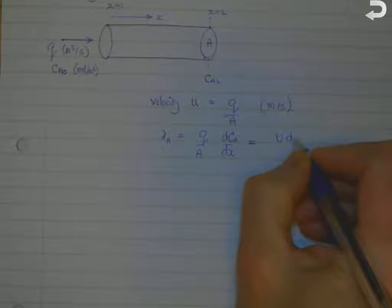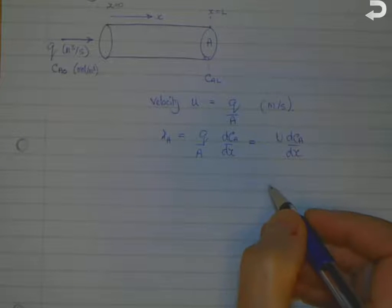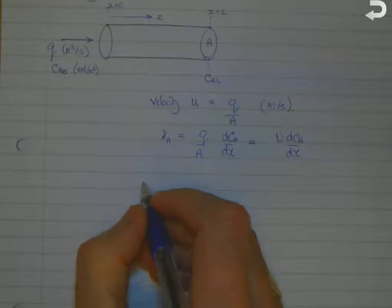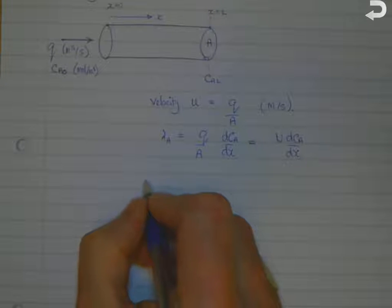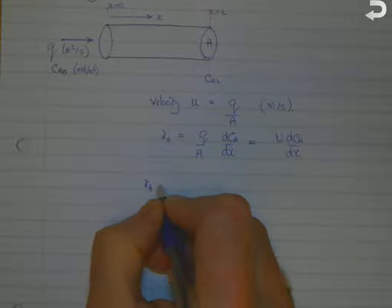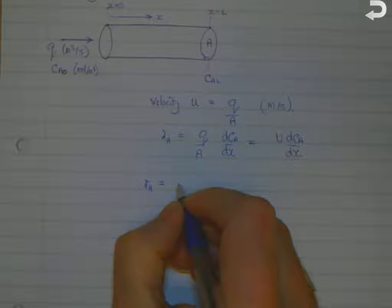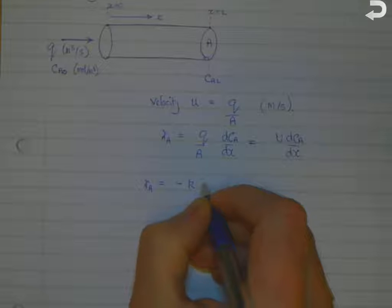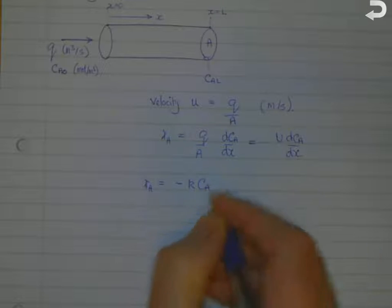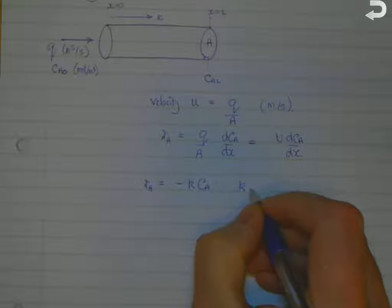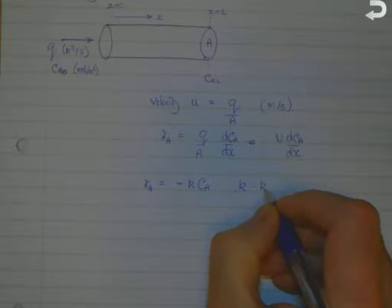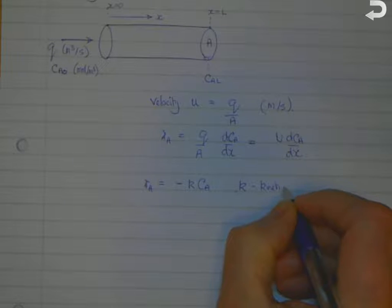I'll just simplify that slightly by saying that is equal to u times dC_A by dx. And we're going to say that we've got first-order kinetics in our starting material A, so that means we can write down the rate equation as r_A equals minus K times C_A. And it's minus because A is being consumed, so r_A is a negative value. And this says K is the kinetic rate constant.